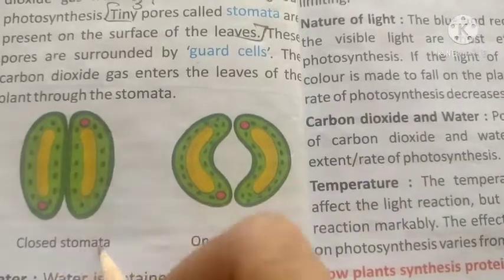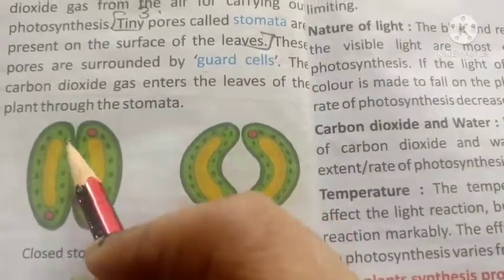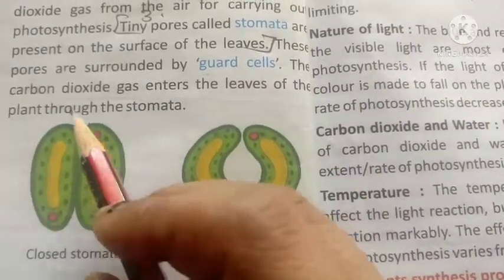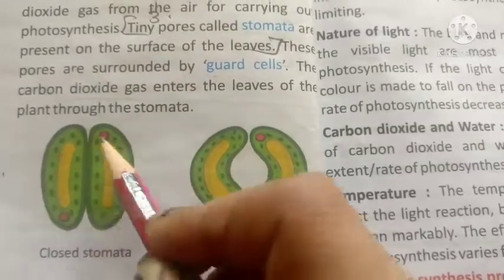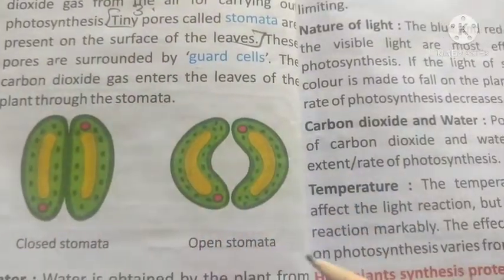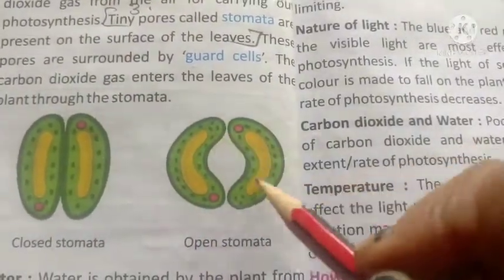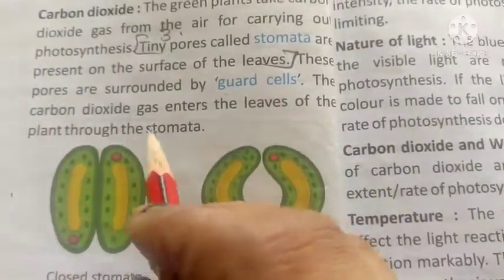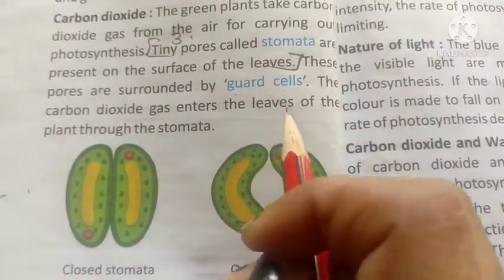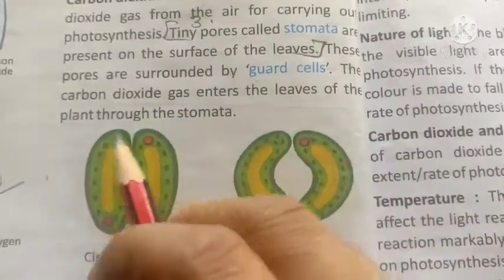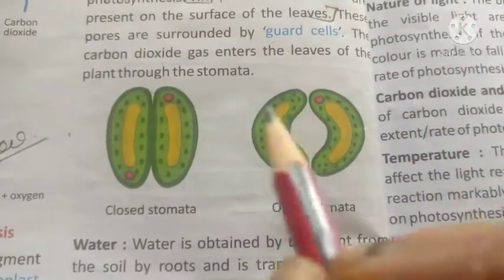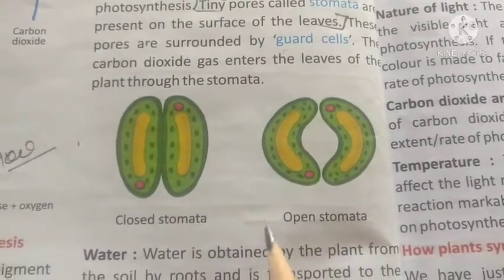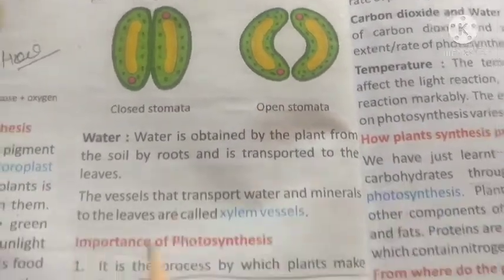These pores are surrounded by guard cells. Look at the picture — this is closed stomata, and these structures are called guard cells. These are open stomata. Carbon dioxide gas enters the leaves of the plant through the stomata.